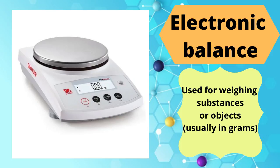Electronic balance, used for weighing substances or objects, usually in grams. Erlenmeyer flask, also known as a conical flask.